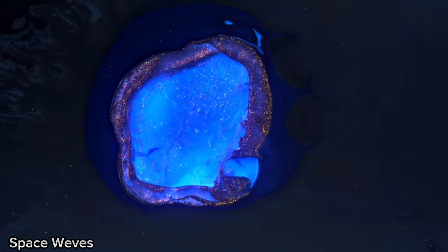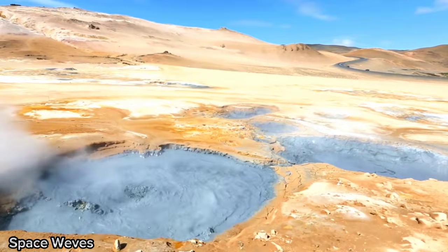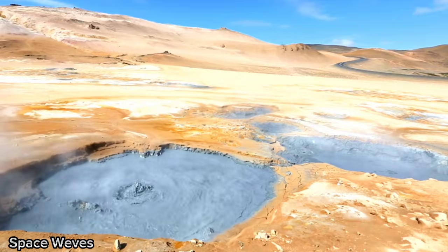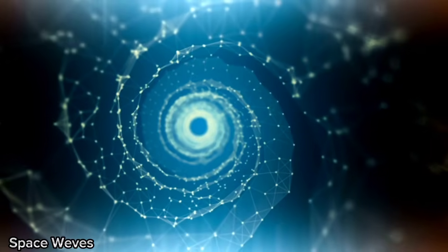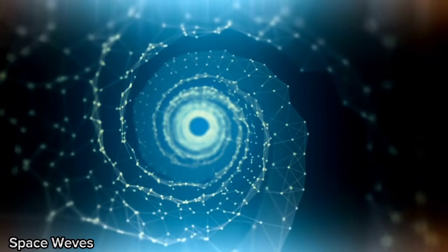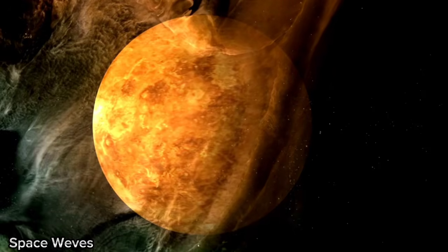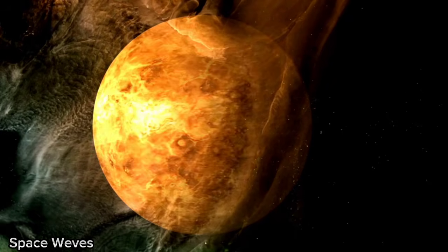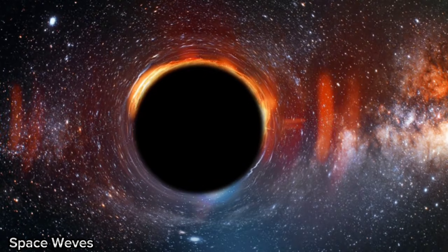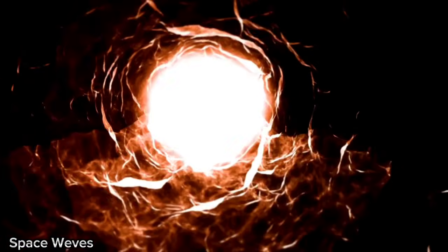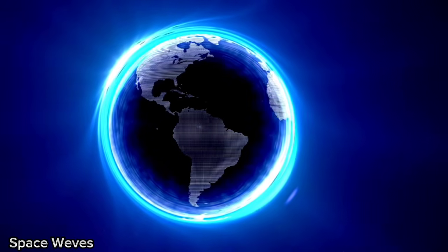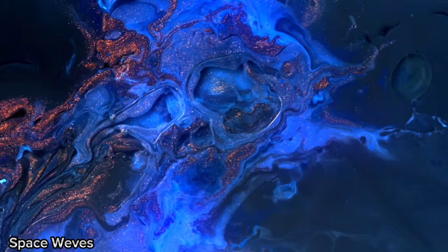These brightness changes, like the dimming event observed in 2019, are signs that the star is undergoing rapid transformations. This dimming may be linked to a massive outflow of material from the star's surface, temporarily obscuring its light. Despite these fluctuations, Betelgeuse continues to emit light, albeit inconsistently, making it a compelling object for study. The possibility that Betelgeuse might soon become a nearby supernova has drawn the attention of space agencies and researchers worldwide. With modern instruments like the James Webb Space Telescope and the Hubble Space Telescope, scientists are gathering an abundance of data on the star. These telescopes allow us to observe Betelgeuse in wavelengths previously out of reach, such as infrared and ultraviolet light, providing insights into the star's internal processes.